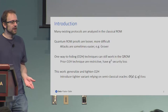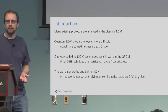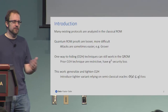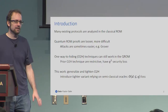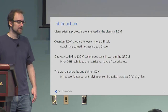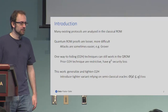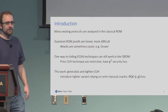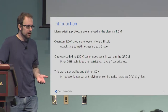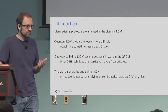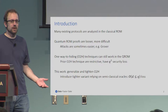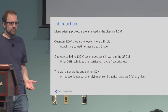But the proofs in the quantum random oracle model are much more difficult and often give looser bounds. We would like to distinguish between cases where the proofs give looser bounds versus cases where the attacks are actually better — the most well-known example being Grover's algorithm. So in that direction, we want to develop techniques that worked in the classic ROM that still work in the Q-ROM.